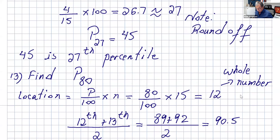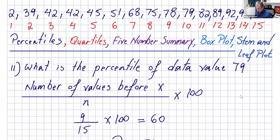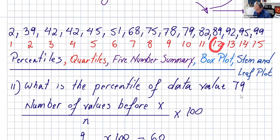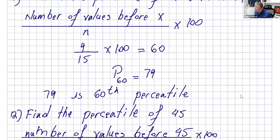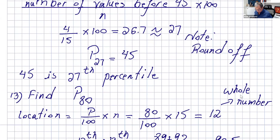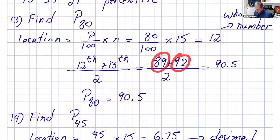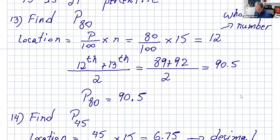If we go to our data, the 12th number is 89 and the 13th number is 92. So, you take the average of these two numbers. And don't forget — do not take just the 12th number when the answer is a whole number. When you take the average of 89 plus 92 divided by 2, you get 90.5. So, you can say p80 is 90.5, or 90.5 is the 80th percentile.